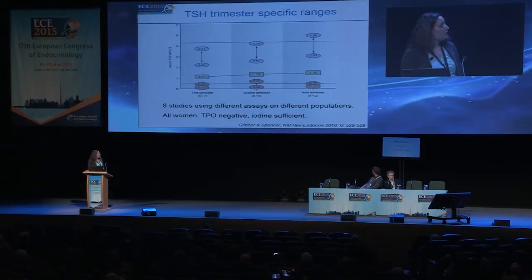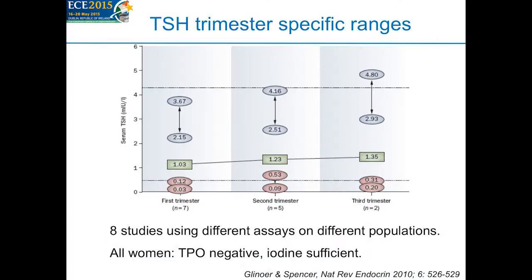This slide from an elegant review in Nature Reviews examined eight studies using different assays on different populations. The green rectangles show the medians. What is nicely illustrated is how, using these eight different assays, there is quite wide variation in the 97.5th centile as well as in the 2.5th centile, with most of the variation at the upper end of the reference range. Serum TSH is indeed lowest in the first trimester and then rises.